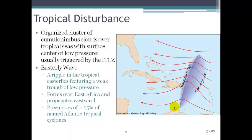Here's a picture of a tropical disturbance. It's an organized cluster of cumulonimbus clouds over the ocean — tropical seas — with a center of low pressure, and it's usually triggered by the intertropical convergence zone. The intertropical convergence zone is the band of low pressure cells that live right around the equator, but migrate northward in the northern hemisphere summer and southward in the southern hemisphere summer.